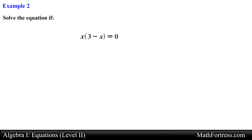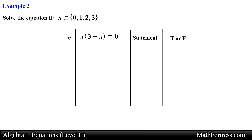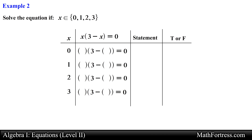Let's try the next example: solve the equation x times the quantity 3 minus x is equal to 0, if x is an element of 0, 1, 2, and 3. Just like the previous problem, let's set up a table and start systematically substituting the elements of the domain into the equation.